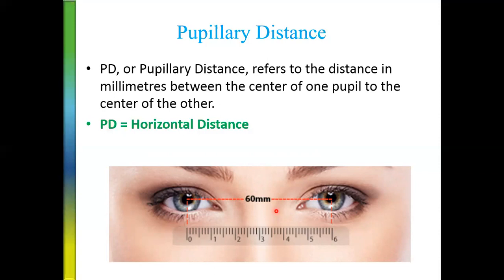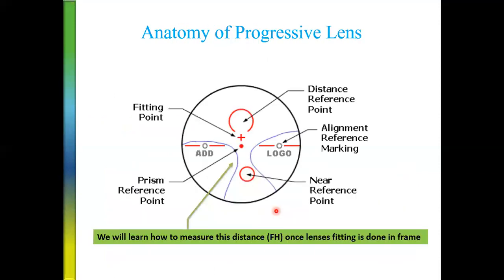PD is the horizontal distance from the center of the nose to the center of the pupil. Now let's understand how the progressive lens is fitted in a frame. Progressive lens fitting is a bit technical compared to single vision and bifocal lenses. There are hidden markings on the progressive lens which you generally don't see once it is fitted in the frame. There are two types of markings — one in red color and one in gray color.